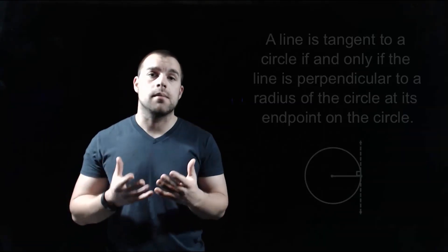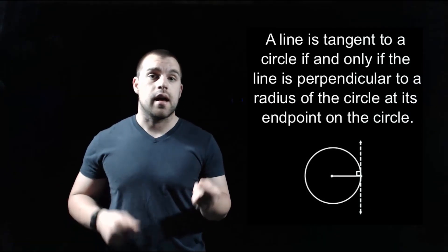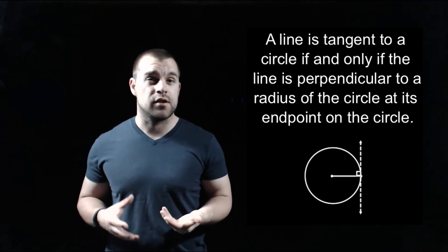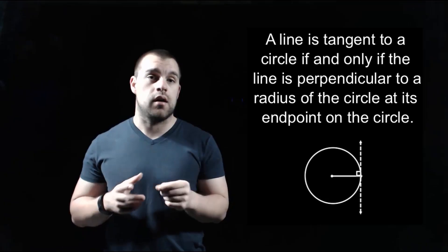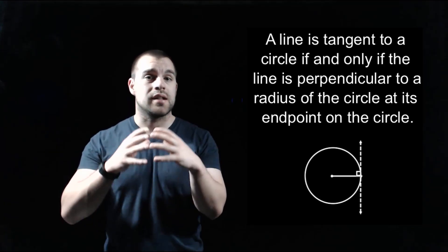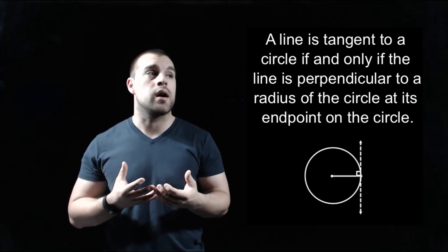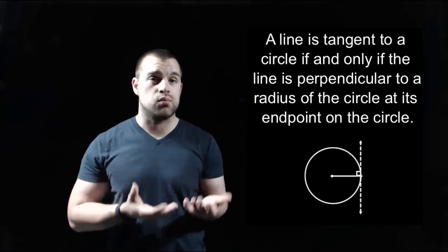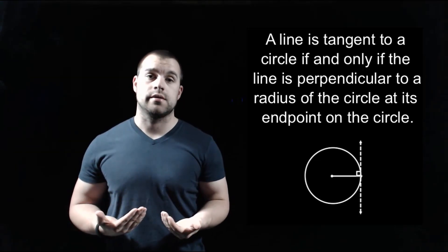The first thing we're going to be checking is if a line is tangent to a circle. In order for a line to be a tangent line, it has to be perpendicular to a radius of the circle at the end of the radius. So we're looking for creating right angles, checking if possible tangents are making right angles with the radius.